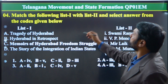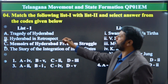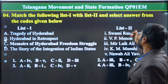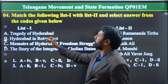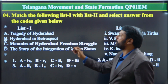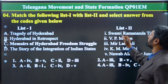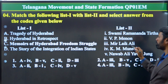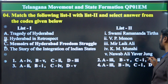Question four: Match the following books in List One with their authors in List Two. List One: A. Tragedy of Hyderabad, B. Hyderabad in Retrospect, C. Momayas of Hyderabad Freedom Struggle, D. The Story of the Integration of Indian States. List Two: 1. Swami Ramananda Thirtha, 2. V.P. Meenan, 3. Mir Layak Ali, 4. K.M. Munshi, 5. Nawab Ali Avar Jang.